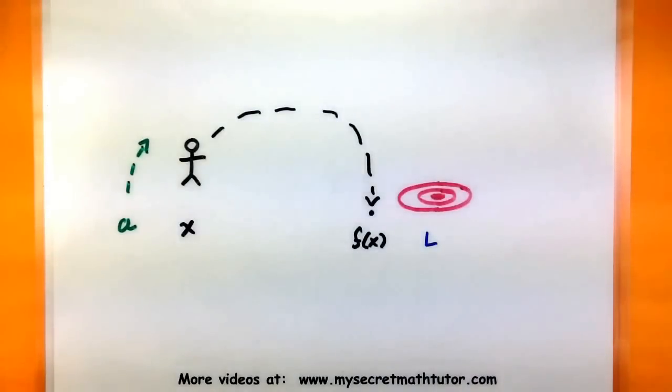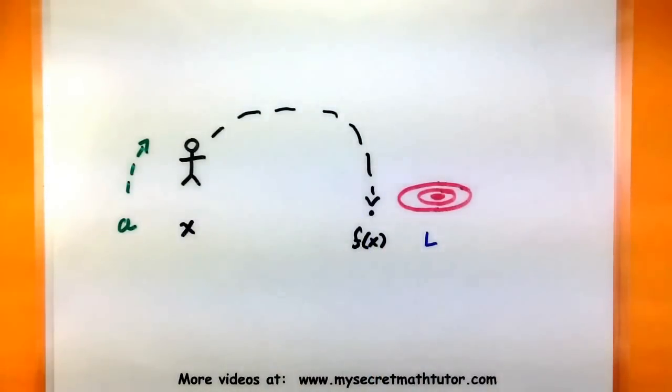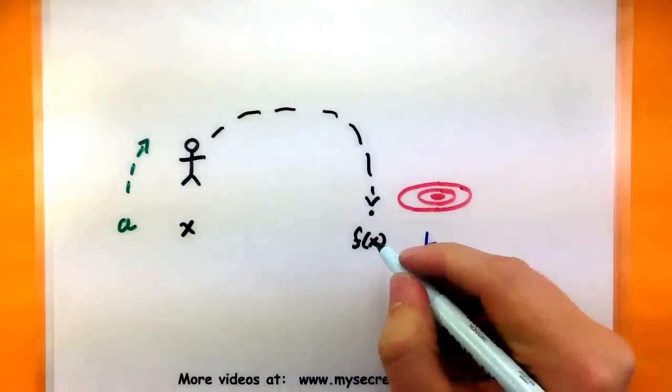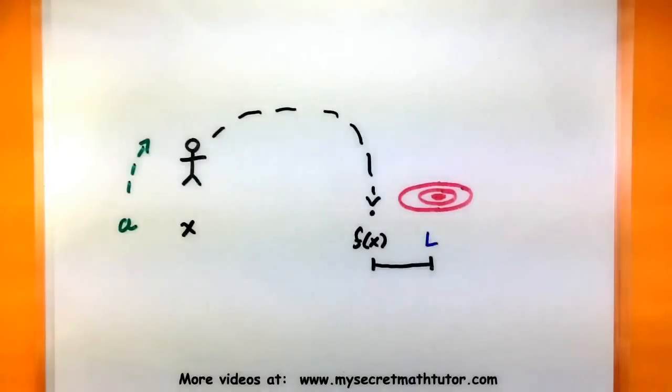They basically say, hey, can you get that ball within, say, five feet of the target? Now since you've been playing this game long enough, you actually know how close you need to stand from the sweet spot in order to make sure the ball actually lands within five feet. So if we had to mark those guys out, that would look like this.